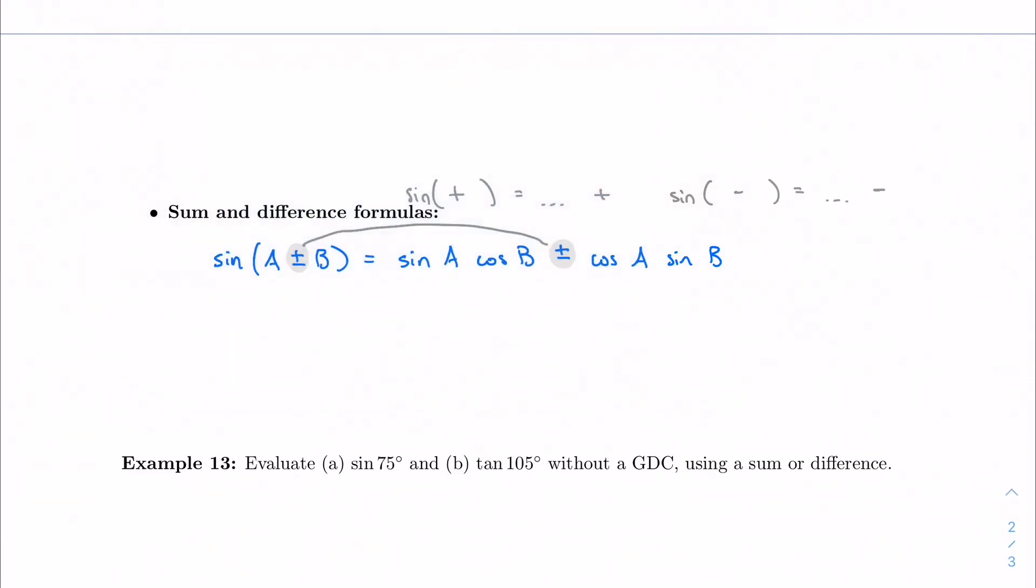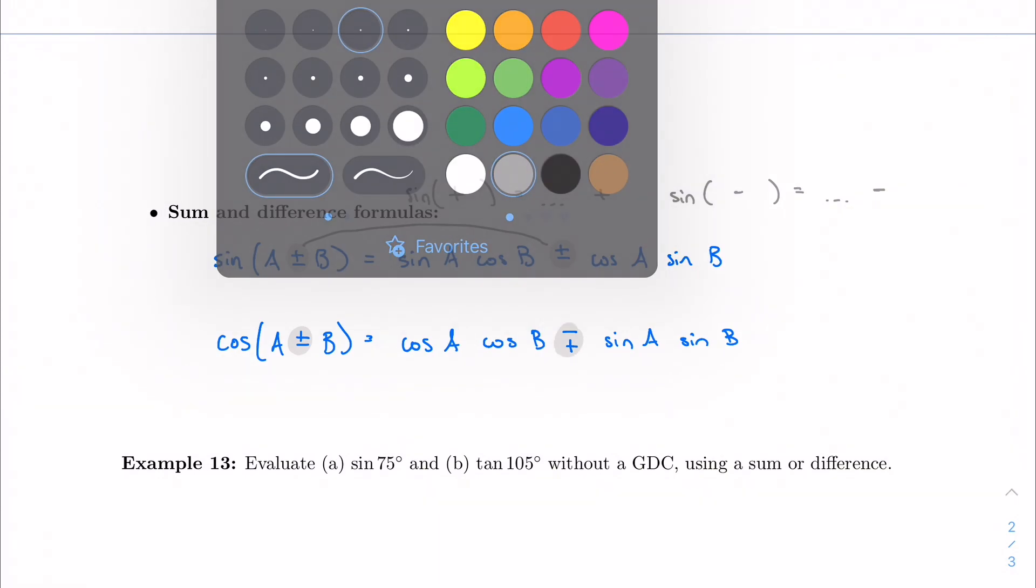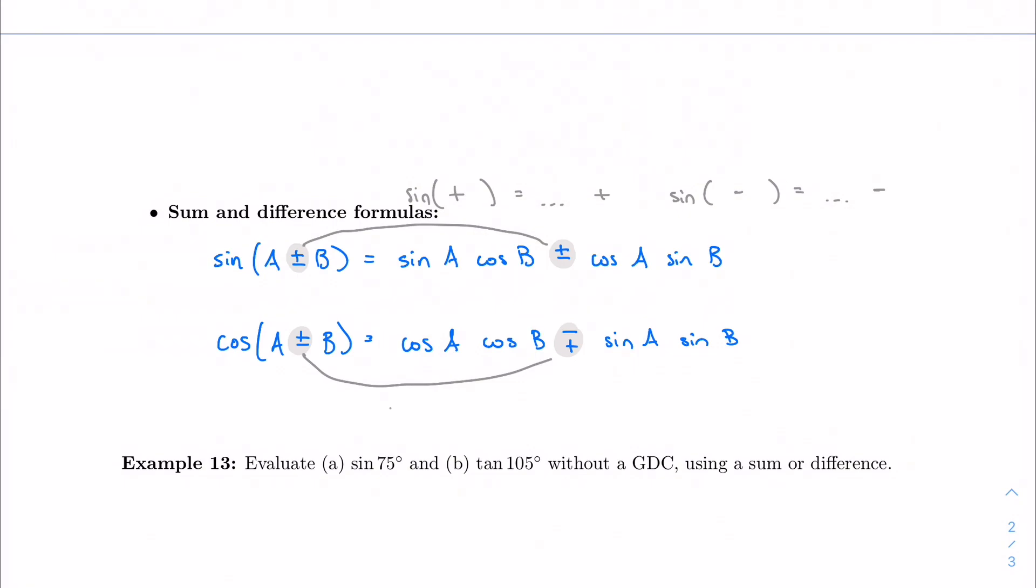With cosine, it works a little differently. I have cosine a, cosine b, minus or plus, sine a, sine b. So in this case, whatever operation you have in parentheses, you take the opposite sign when you actually use this formula.